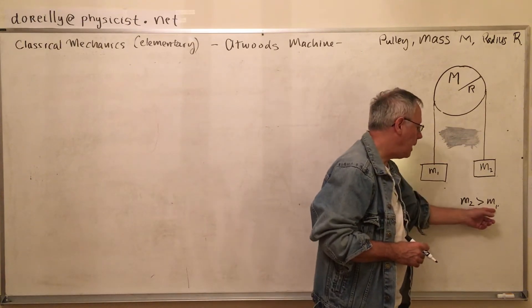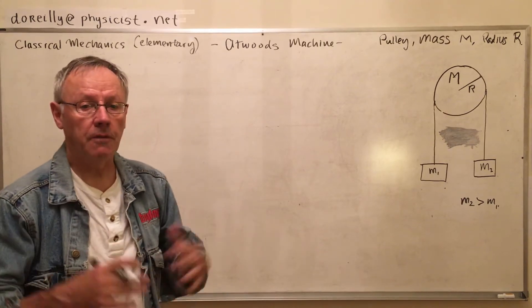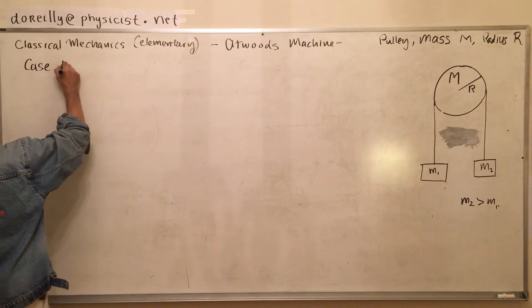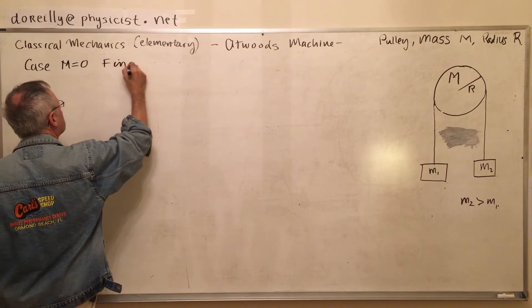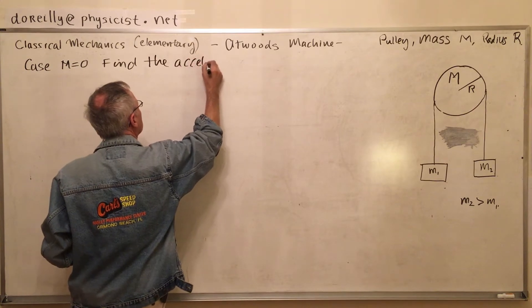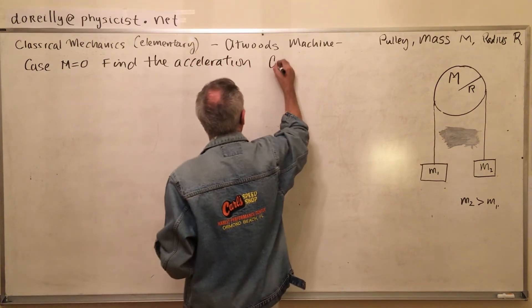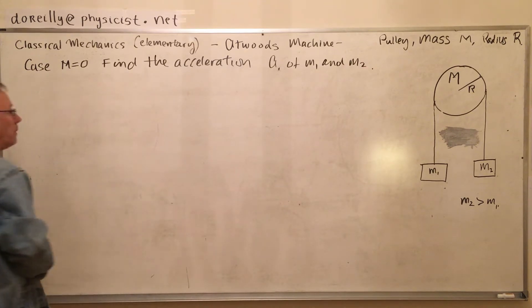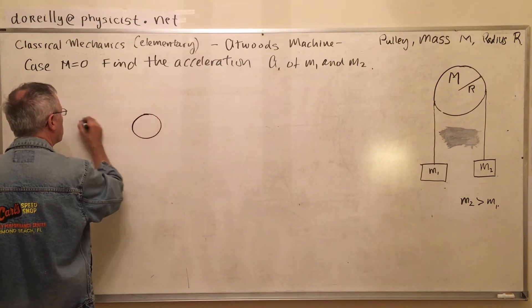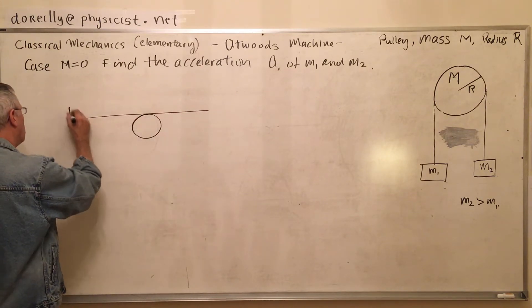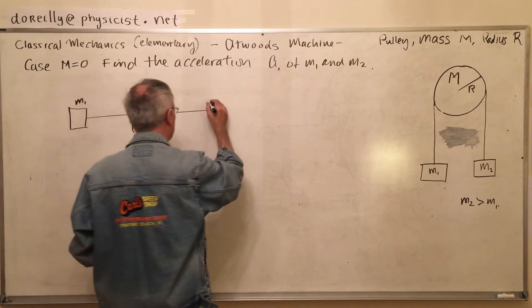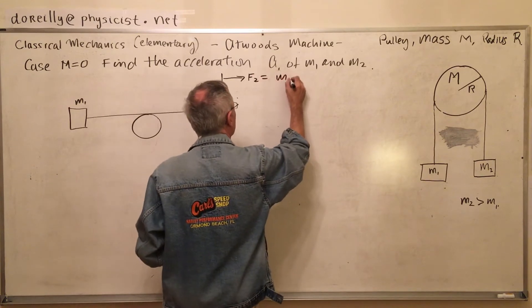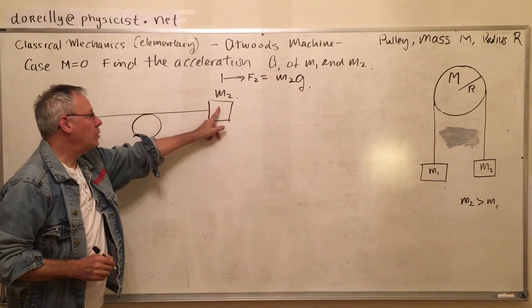Now I could say that m2 is greater than m1. I don't have to say that — that would come out in the wash. For the case of m equals zero, we just want the acceleration of the masses m1 and m2. So we'll stretch out the pulley. No need for tension. So the force f1 due to m1 is due to gravity — gravity pulling this one down.